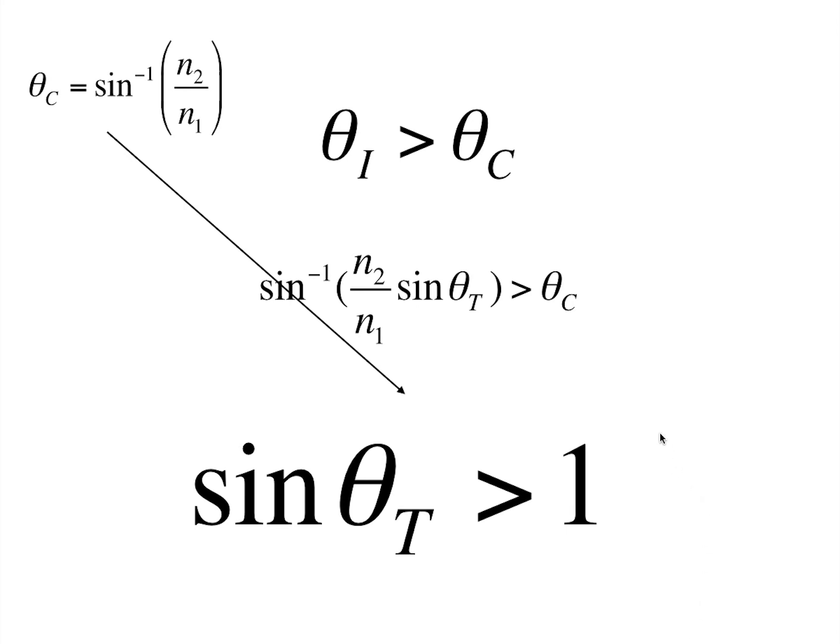we get sine theta t is greater than 1 as the relation which is required for total internal reflection, which seems quite absurd, but sine theta t is still a real number.